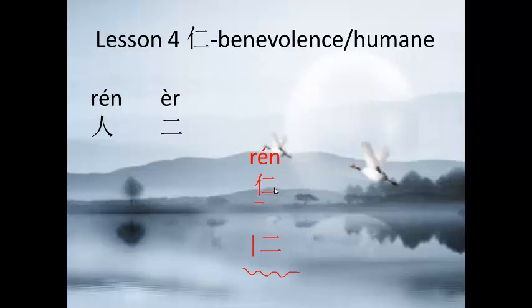That's the meaning of 仁. So, the horizontal lines are two ways, two principles, two doctrines. And we have a person on the left part. So, 仁 means people follow the principle of heaven and the principle of earth.